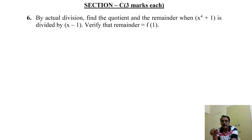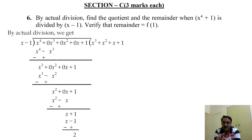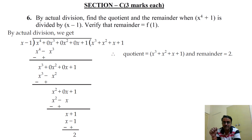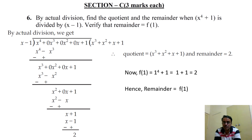Section C, Question 6: by actual division, find the quotient and remainder when x⁴ + 1 is divided by x - 1. Dividing, we get quotient = x³ + x² + x + 1 and remainder = 2. We then verify: f(1) = 1 + 1 = 2, hence remainder equals f(1), confirming the remainder theorem.